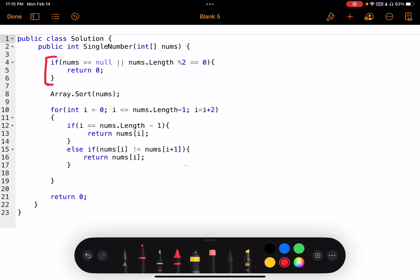So here is my C# solution. I start by having a validation to make sure that nums is not null and the length is not a multiple of two. In either of the cases, if that is true, if any of the condition is true, I am returning zero. Then I am sorting the array in ascending order.